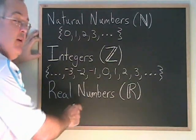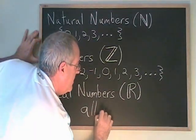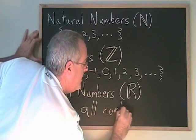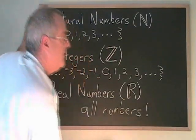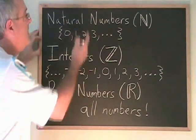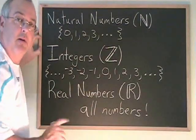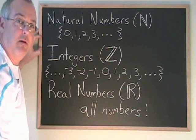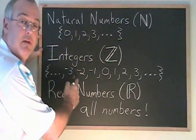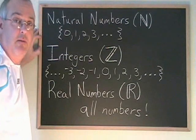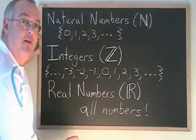Real numbers is all numbers. Real numbers includes the natural numbers and the integers — all the positive and negative whole numbers and 0 — but it also includes all the fractions and decimals located in between these whole numbers. Real numbers includes every other type of number.